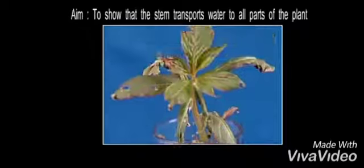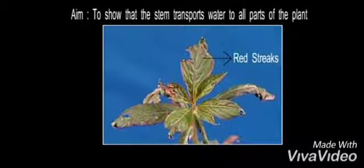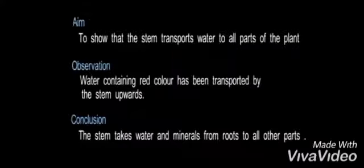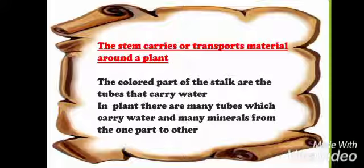This happens because the stem carries or transports material around the plant. In this video we learned that the colored parts of the stalk are the tubes that carry water.